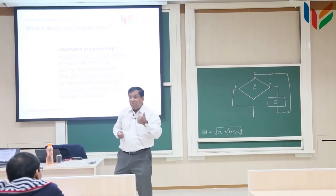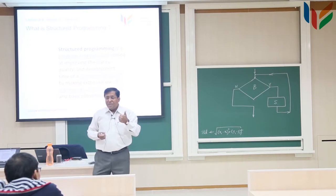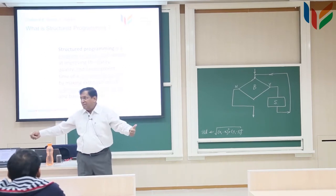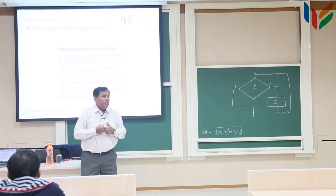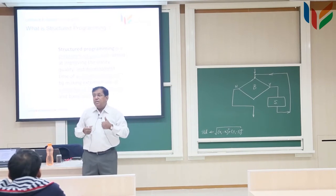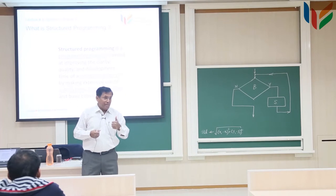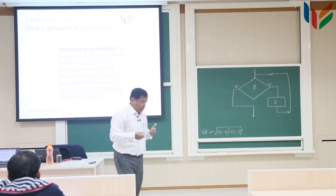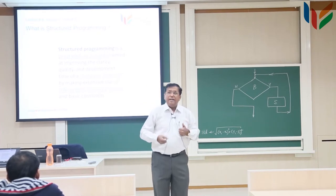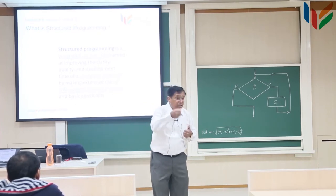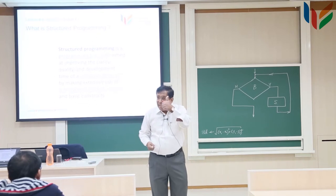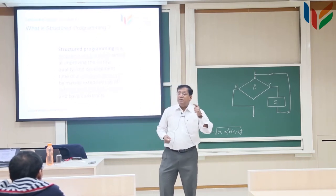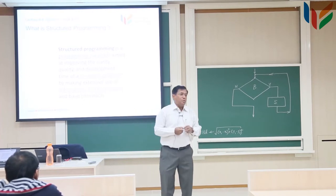Number one is the time required to execute. Sometimes there are programs which take a long time, and sometimes there are programs which take very short time. Obviously you are looking at efficient programming. There are techniques — if you do the analysis of the programs, you will find that we can tell you how to analyze the efficiency of the program. The time is very important. The second important parameter about the quality of a program is how much space it is going to take.